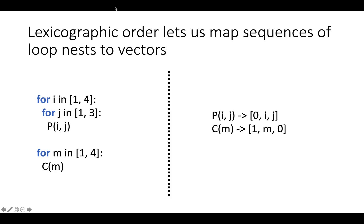In some earlier videos we talked about how in the polyhedral model we can use lexicographic ordering to map sequences of loop nests to vectors. So a program like this that consists of two different loop nests, one of depth two and one of depth one, with two statements P and C, can be written as having the schedule that P(i,j) happens at time vector [0, i, j] and C(m) happens at time vector [1, m, 0], where these vectors basically correspond to the loop structure of the program on the left.